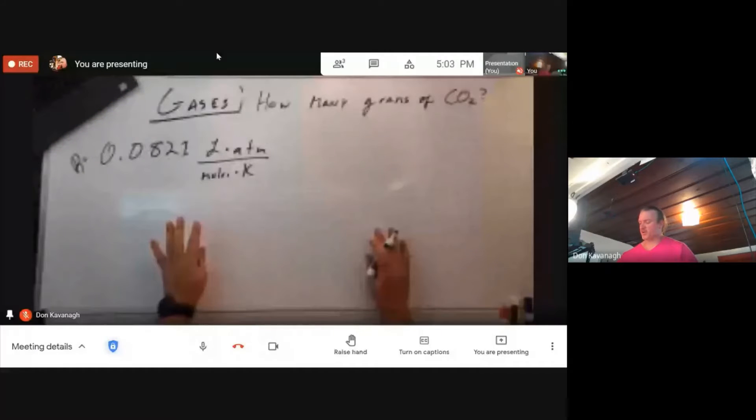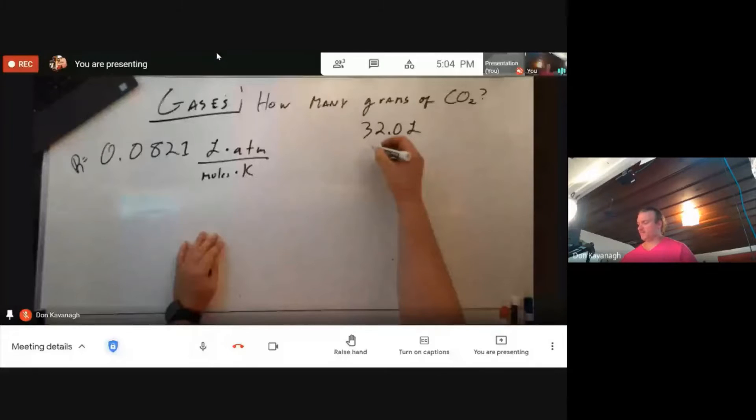We know that we have a 32.0 liter container of gas. We know that it's at a pressure of 1.1 atm. We know the temperature of the gas, which is 300 degrees Kelvin.